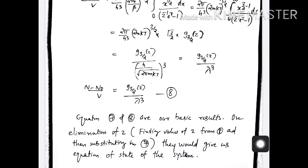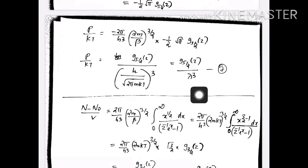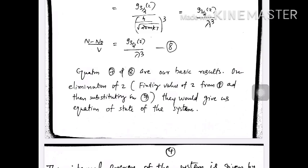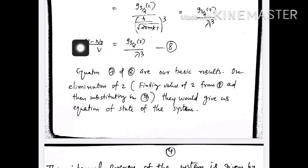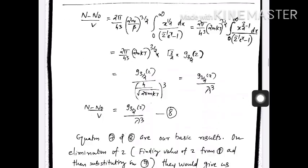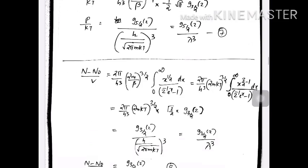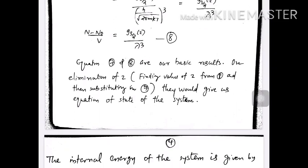Equations 7 and 8 are our basic results: p/kT = g_{5/2}(z)/λ³ and (N minus N₀)/V = g_{3/2}(z)/λ³. These are now greatly simplified. By expanding g_{3/2}(z) as a power series in z and solving for z, then substituting into equation 7, we can obtain the equation of state of the system, which gives p in terms of volume and temperature.